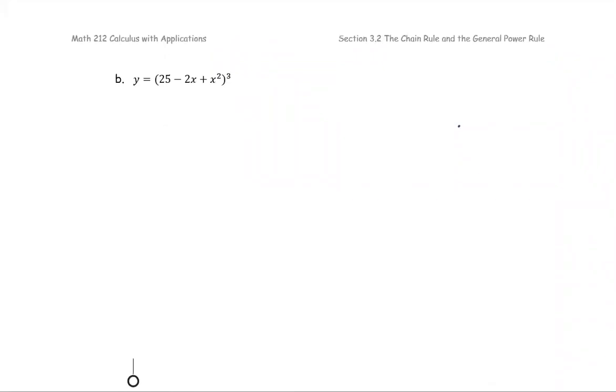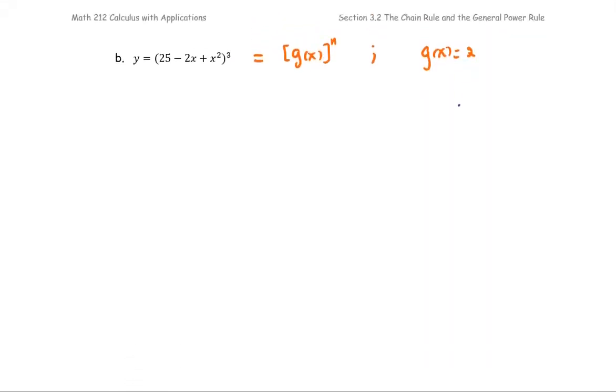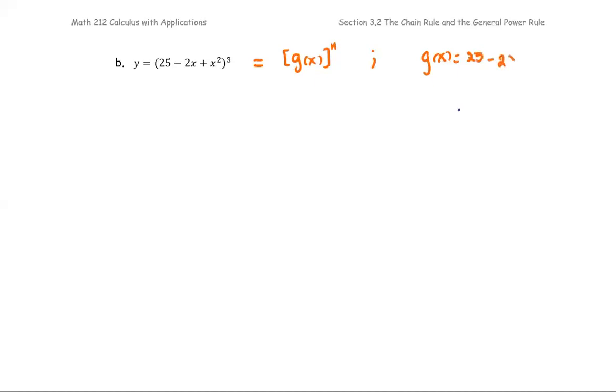We have the function y in the form of 25 minus 2x plus x squared to the power 3. You can see this as the function g raised to the power n, where your g(x) is 25 minus 2x plus x squared, and your n for this case, n is 3.